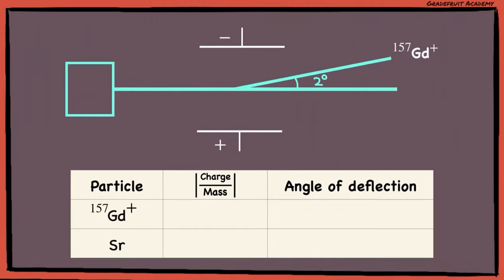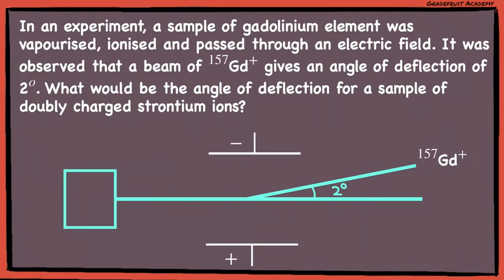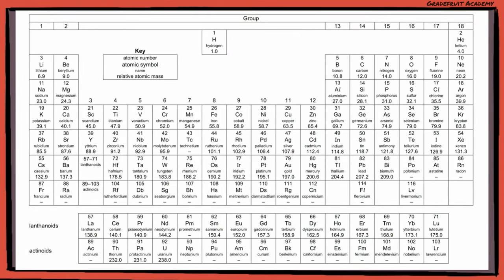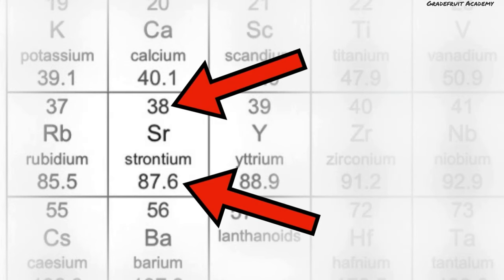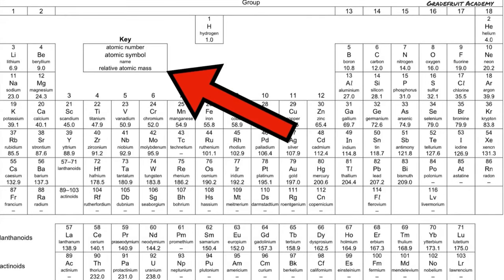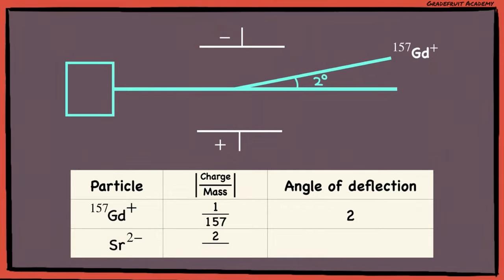Let's fill in the blanks. The question tells us that the angle of deflection of gadolinium is 2 degrees, and the magnitude of the charge-to-mass ratio is 1/157. The strontium ions are doubly charged, so the magnitude of the charge is 2. For the mass of strontium, we go to the periodic table to locate strontium in group 2. We want the mass number, so we choose the bottom number — always check against the periodic table key. With that, the charge-to-mass ratio is 2/87.6, which can be rewritten as 5/219 after simplification.